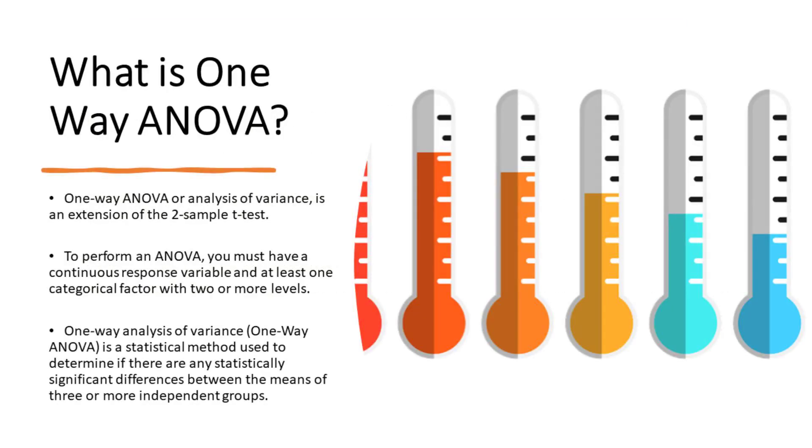OneWay ANOVA, or analysis of variance, is an extension of the two-sample t-test. To perform an ANOVA, you must have a continuous response variable and at least one categorical factor with two or more levels. One-way analysis of variance is a statistical method used to determine if there are any statistically significant differences between the means of three or more independent groups.